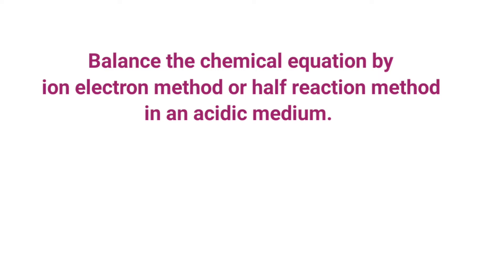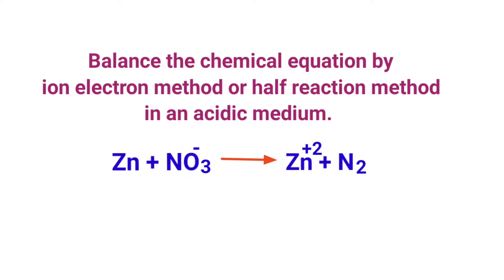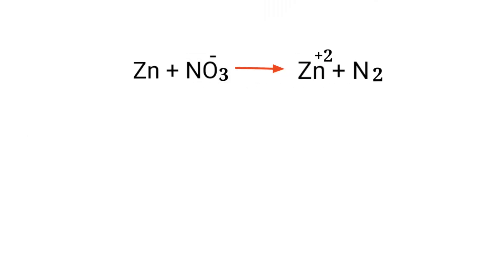Balance the chemical equation by the ion electron method, or half reaction method, in an acidic medium. The equation is: zinc plus nitrate ion gives zinc ion plus nitrogen. In the ion electron method, one reaction is divided into two half reactions, which are then balanced and added together.